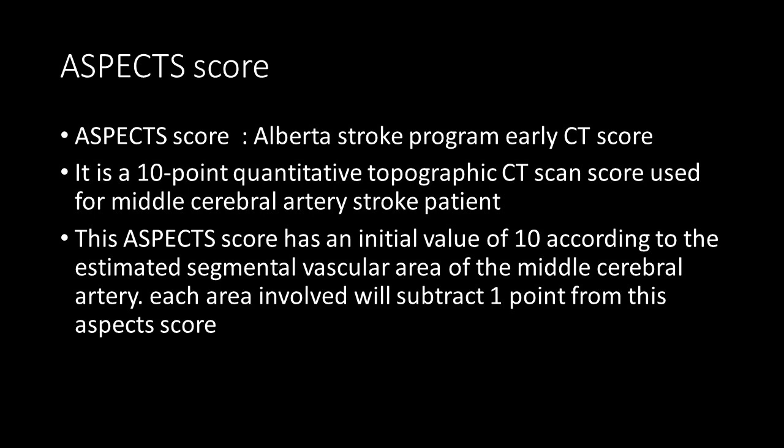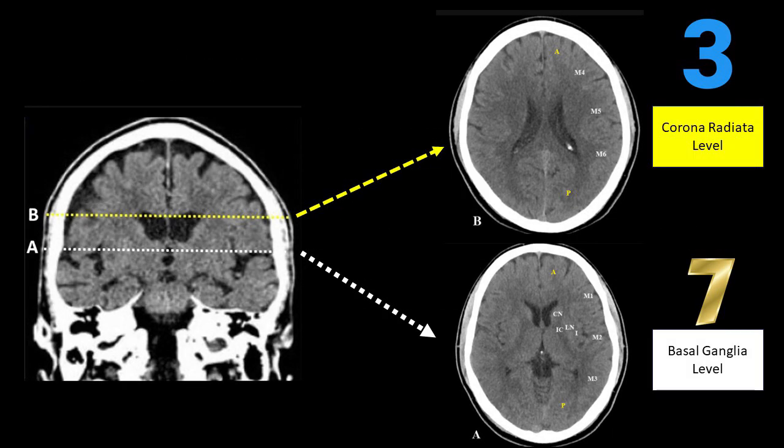This ASPECTS score has an initial value of 10 according to the estimated segmental vascular area of the middle cerebral artery. Each area involved will subtract one point from this ASPECTS score. These 10 vascular regions are divided into two levels: at the level of the basal ganglia and the level of the corona radiata.